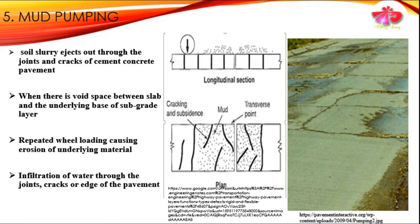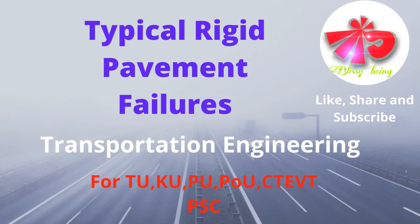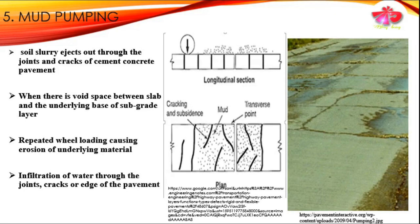The fifth type of failure pattern is mud pumping. Mud pumping occurs when soil slurry ejects out through the joints and cracks of the cement concrete pavement. It occurs when there is a void space between the slab and the underlying base or subgrade layer. It is also caused due to repeated wheel loading causing erosion of the underlying materials, and infiltration of water through the joints, cracks, or edges of the pavement, ultimately causing failure in the rigid pavement.